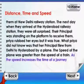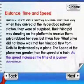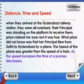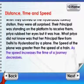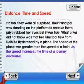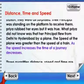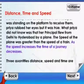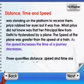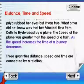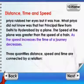Priya rubbed her eyes, but it was true. What Priya did not know was that her principal flew from Delhi to Hyderabad by a plane. The speed of the plane was greater than the speed of the train. As the speed increases, the time of a journey decreases.